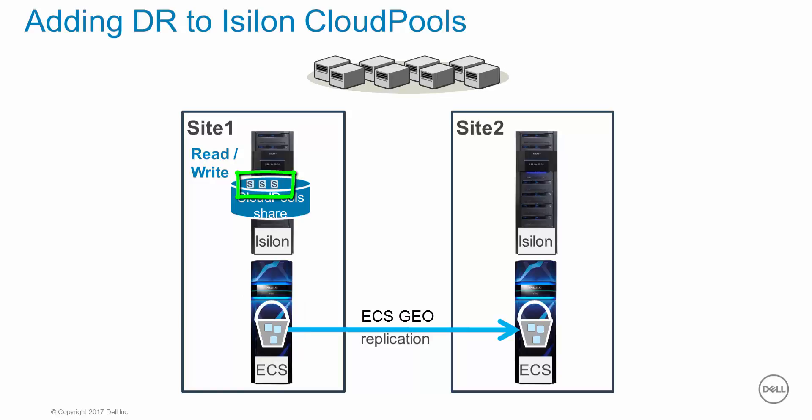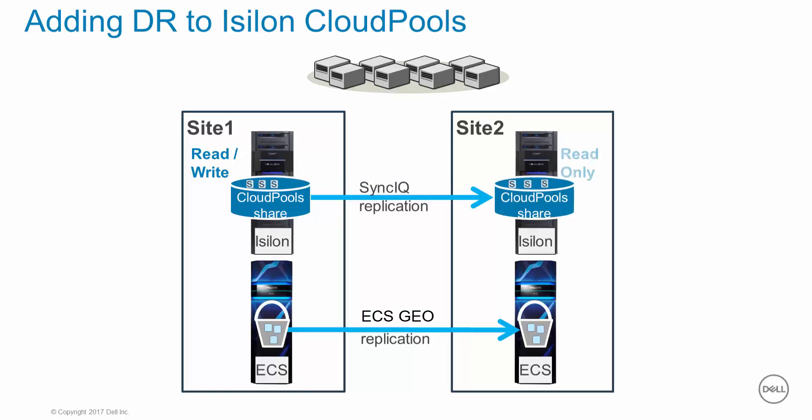The SmartLink files can be protected by NDMP-based backup or SyncIQ. In this video we will focus on SyncIQ. SyncIQ is a licensed OneFS feature that uses policies to replicate data between Isilon sites. It is Cloud Pools aware, and if your destination is OneFS 8.0 or later, it recognizes SmartLink files and by default replicates them without pulling down the data from the ECS system.